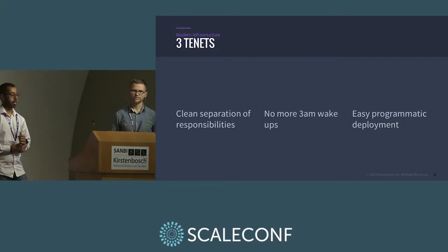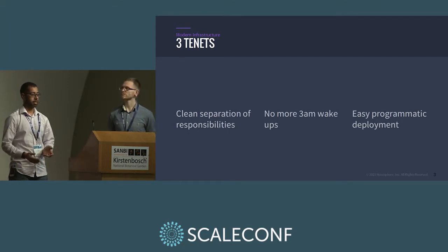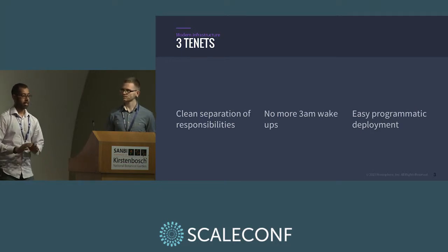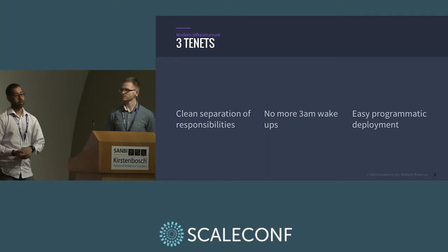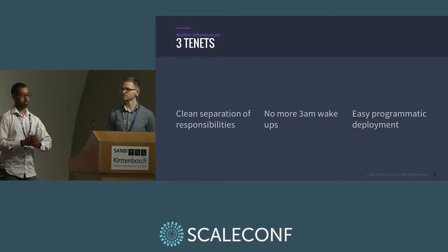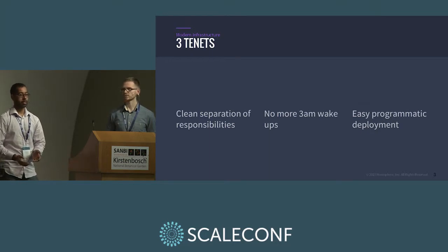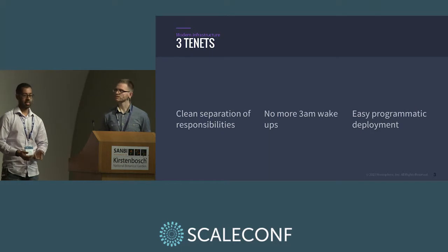There are three tenets important to understanding why something like Mesos made it easy for Twitter to scale to the size it did. At any point in time, Twitter may have only three people on call looking after their entire infrastructure — running tens of thousands of nodes and millions of users. Software like Mesos basically helps that. First, we have a clean separation of responsibilities. People don't get woken up at three o'clock in the morning, and there's easy programmatic deployment.